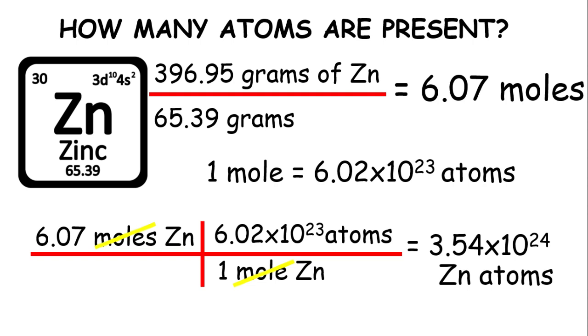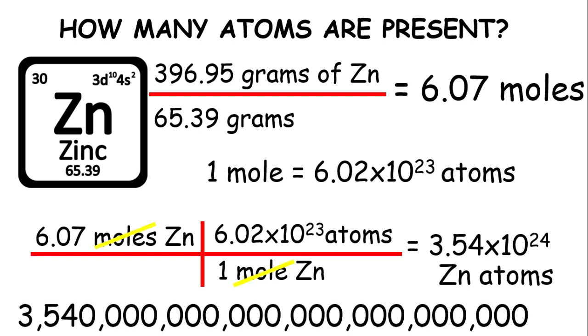So to give you a vision of how huge that number is, after 354 you will have 22 zeros. That's how huge the number is. So we will have more examples in the next videos.